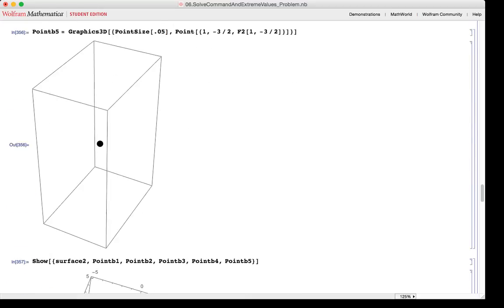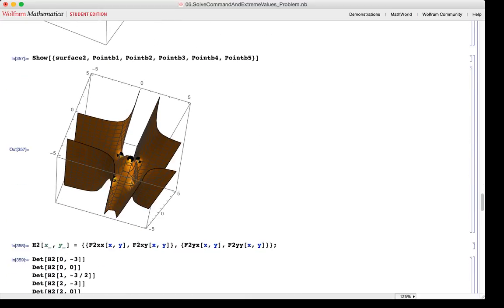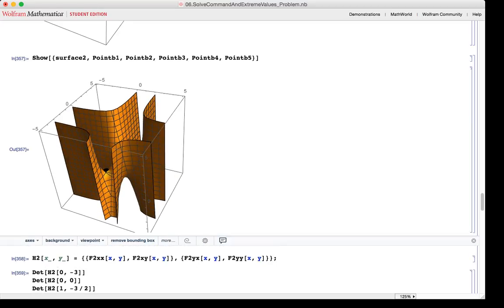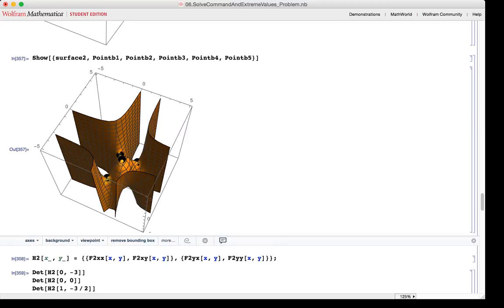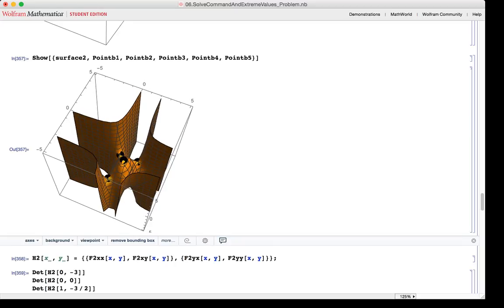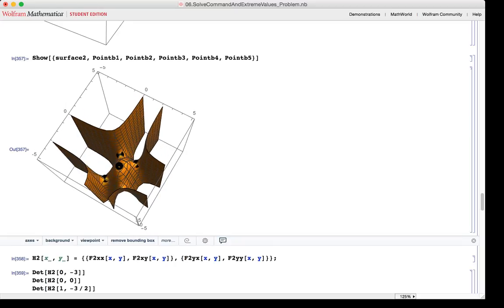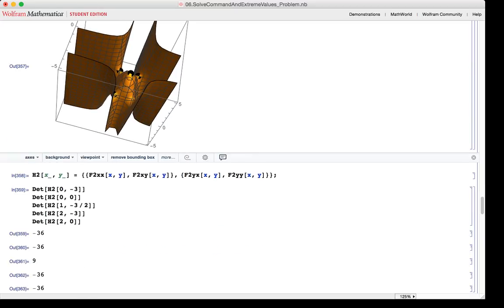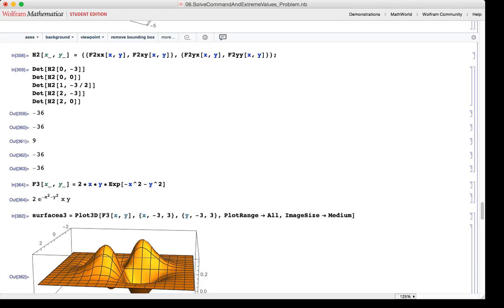All 5 of these points are then graphed and called point B1 to point B5. Then all these points are graphed with this function that we defined earlier. As you can see, the black points correspond to the critical points of the function. Next, the Hessian for this function is defined. And as we can see, there's only one min or max and four saddle points.